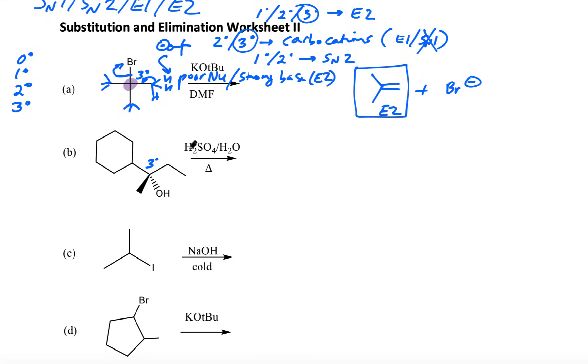Now we look at this. This is not really a base at all or a nucleophile. This is a strong acid. And so whenever we have acid, then we're not going to get E2 because that needs a strong base. And we're not going to do substitution because this is not really a nucleophile. This does not want to attack.